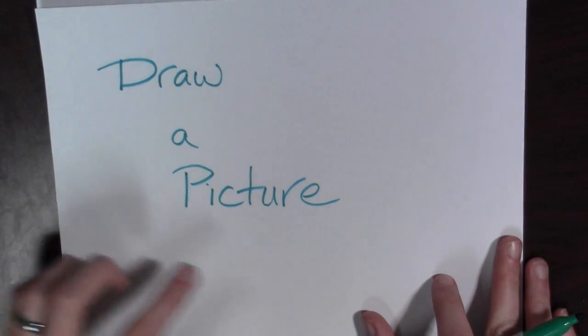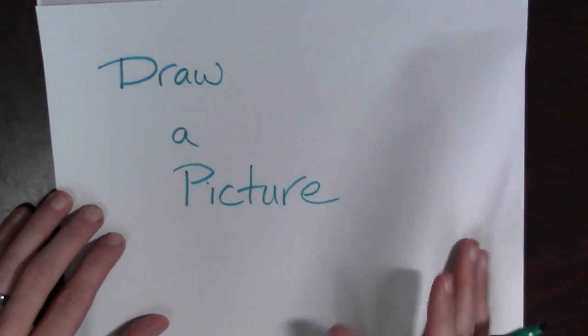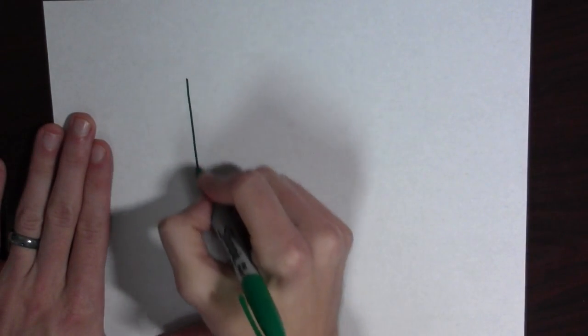The first step is to get out your markers and draw a picture. Alright, let's draw a picture of this. Well, I have a rectangle.